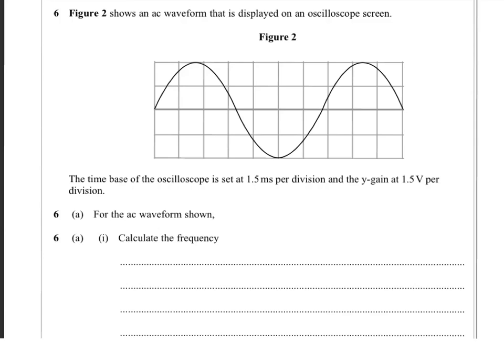Okay, so this one says we've got an AC waveform on the screen. The time base is set at 1.5 milliseconds per division. So remember, what that means is each division or little square represents 1.5 milliseconds on that horizontal axis. The Y gain is 1.5 volts per division.